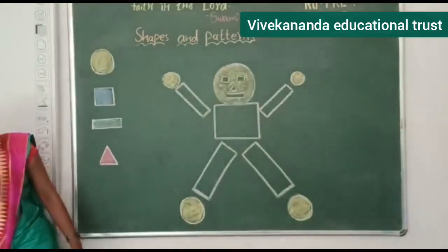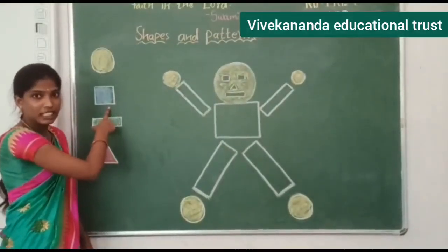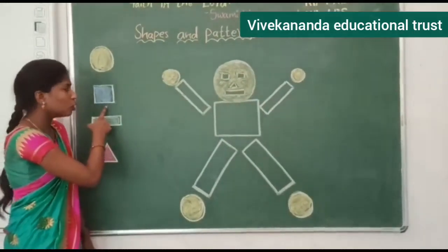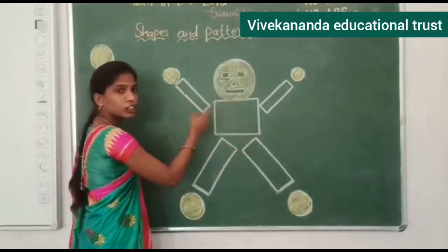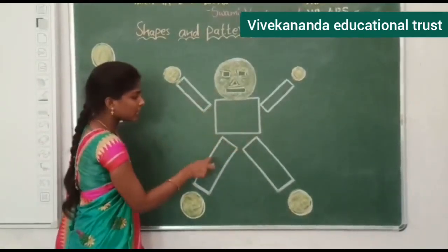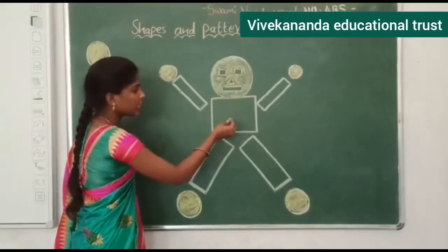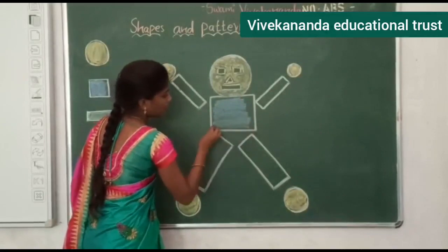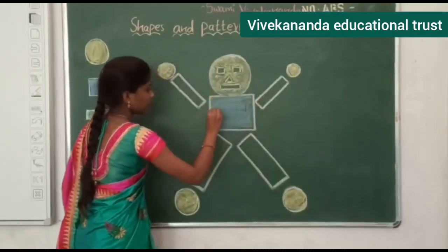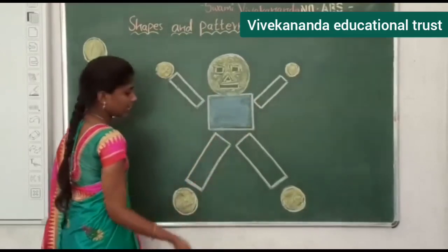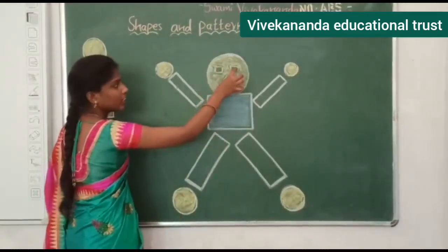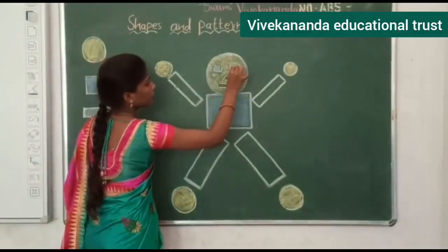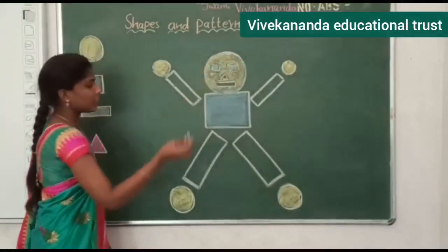Next, what shape is this? Square. Square is in what colour? Blue. So we have to give blue colour to squares. Where is the square in this Robo? The body part is square shape, so give blue colour. Then the two eyes are in square shape, so give blue colour.